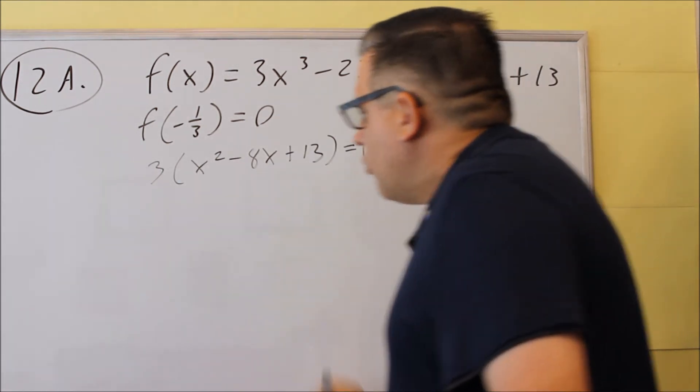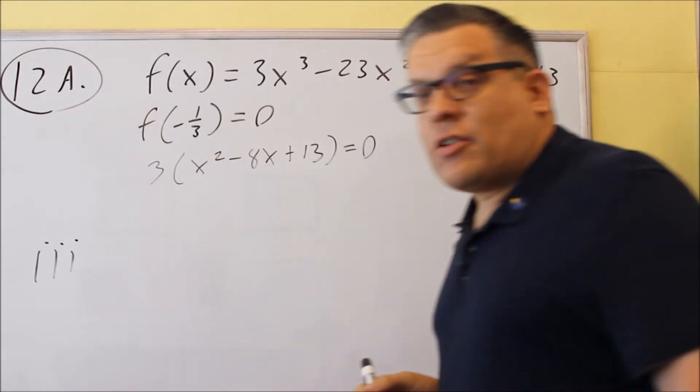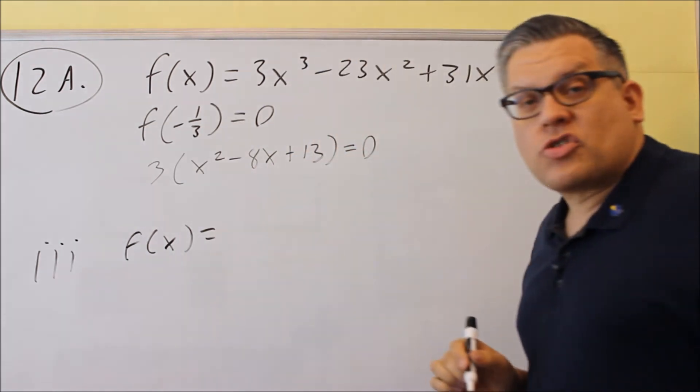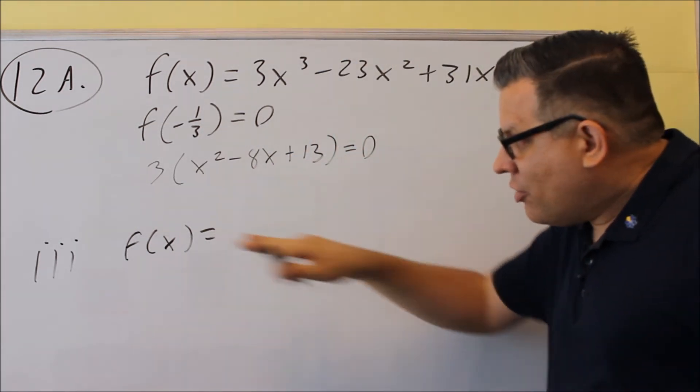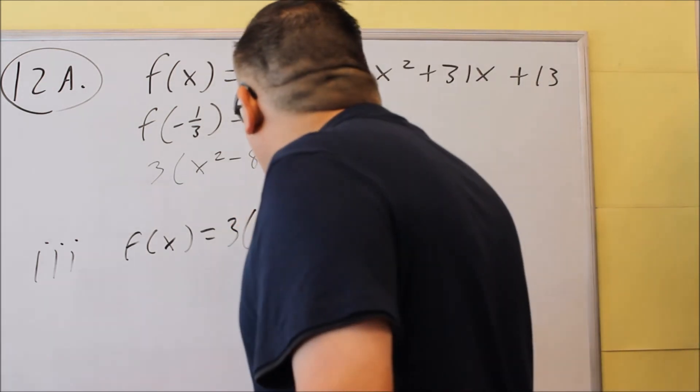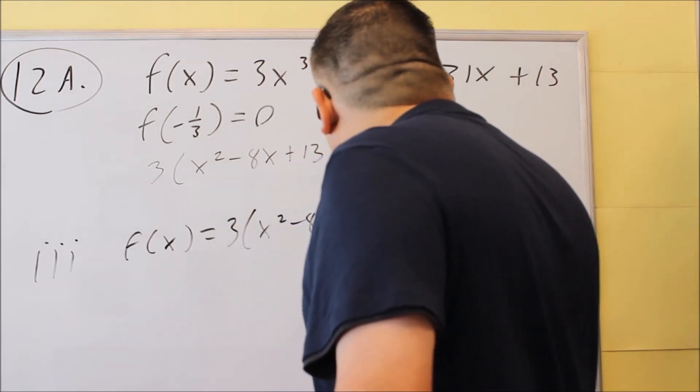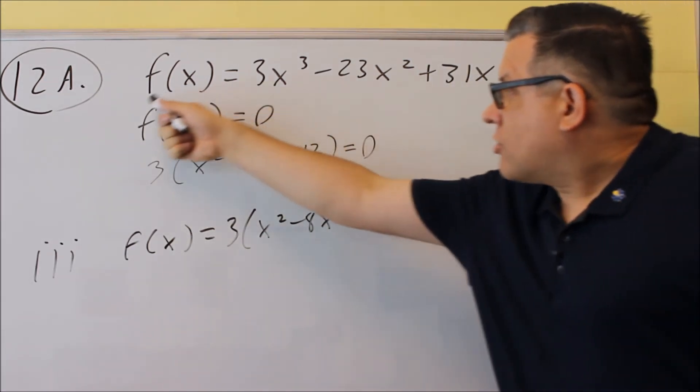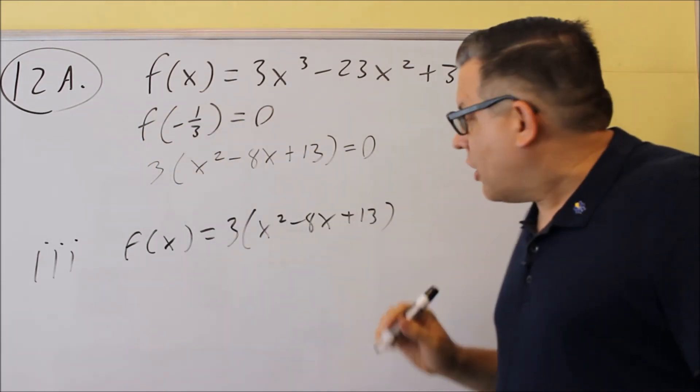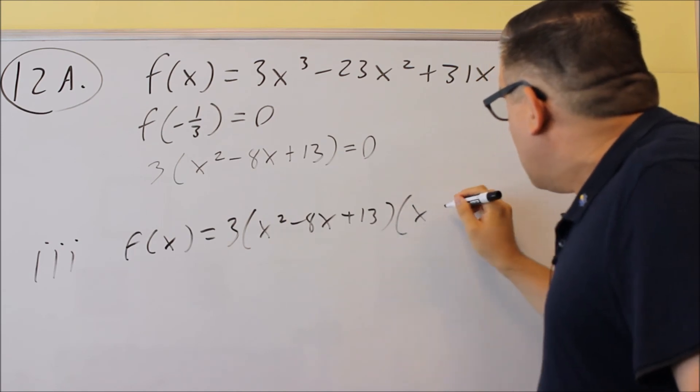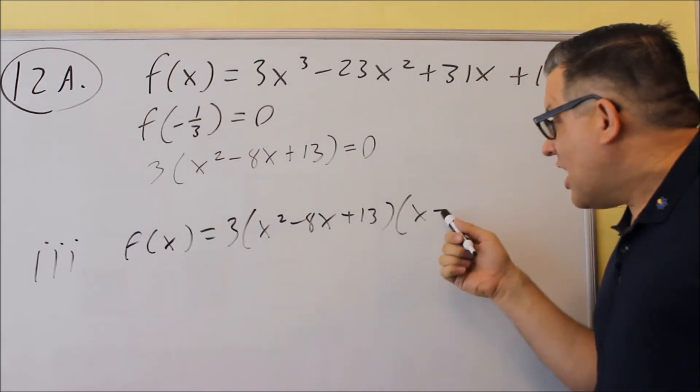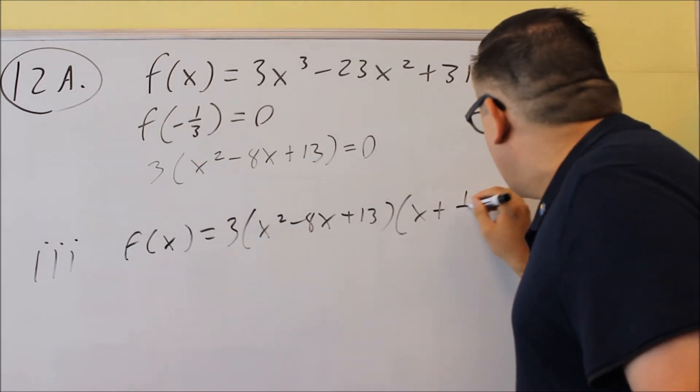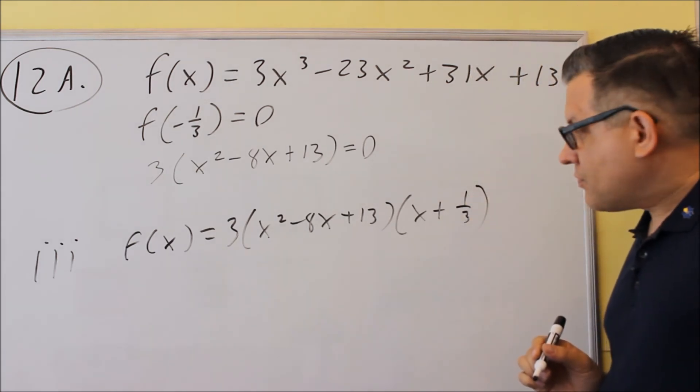So part 3 would be the one where they want you to factor. Now, this part that we had earlier, this is actually going to be part of my answer. So almost always you're going to use the answer you got for part 2, and you can use it in part 3. Okay, so we have 3 times x squared minus 8x plus 13. So we have that part so far, and we know that part's factored and it's correct. Now you also want to include the zero here, the negative one-third. Whenever you write that in there and turn a zero into a factor, it's always x minus whatever the zero is. Now in this case, you have x minus a negative one-third, and that's going to turn that into a plus one-third. So we have this.